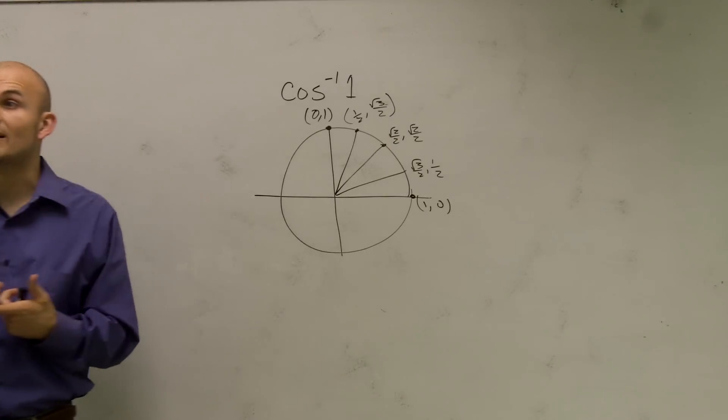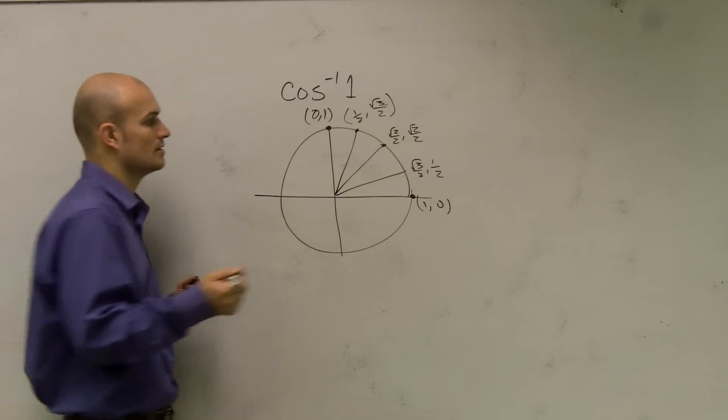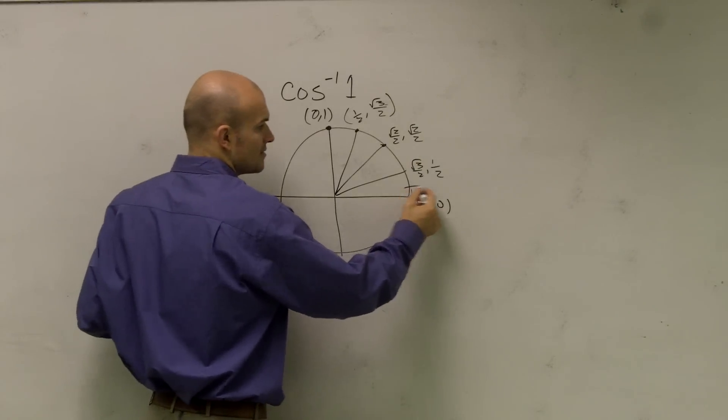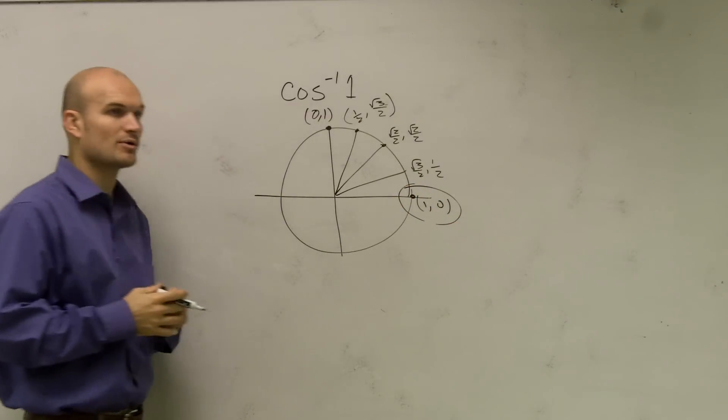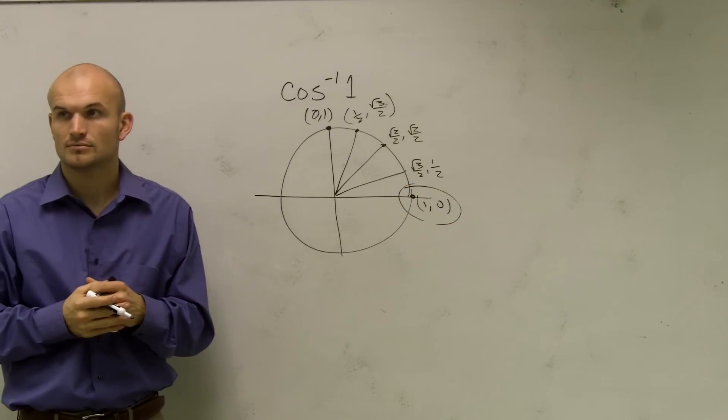Obviously remember, cosine deals with our x value of our coordinate on the unit circle. So therefore, if you notice, here's the only point where cosine is going to equal to 1, right?